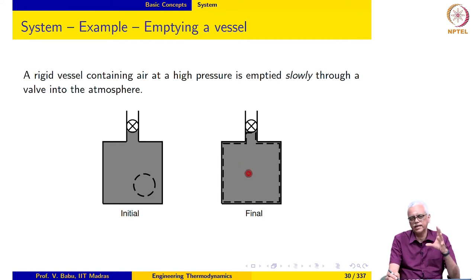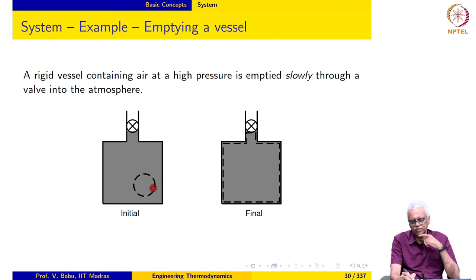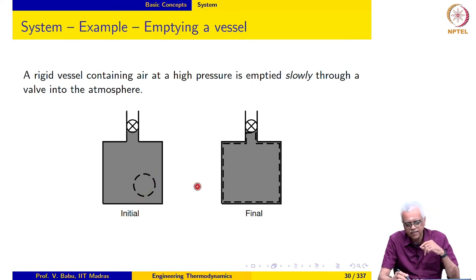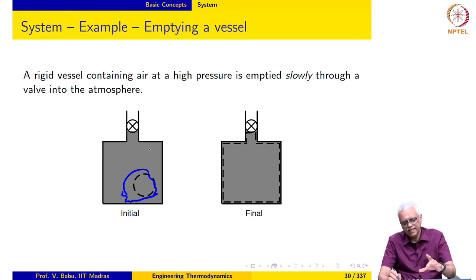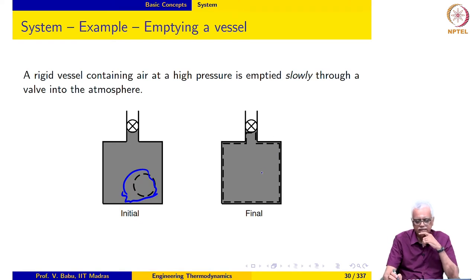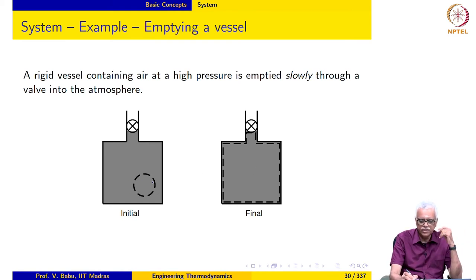Once a proper system is defined after looking at all aspects of the problem and the physics, the analysis becomes very simple, as we will see later. The initial shape of the system we have chosen is immaterial for the analysis — it could have been any amoeba shape. As it expands it will go and fill the entire vessel; the actual shape is immaterial. What is important is the concept that the final mass in the vessel should be taken as a system, and we then work backwards to identify the initial shape.